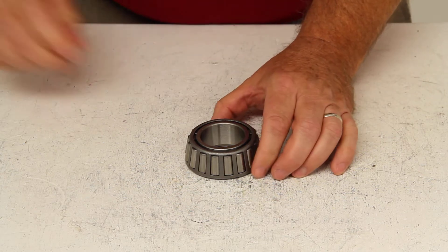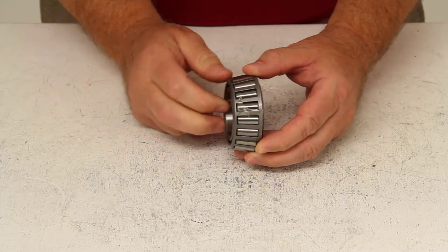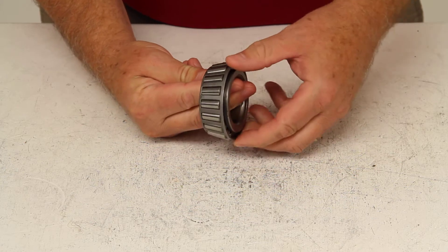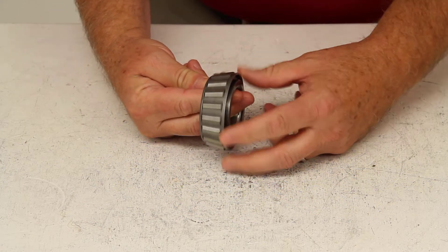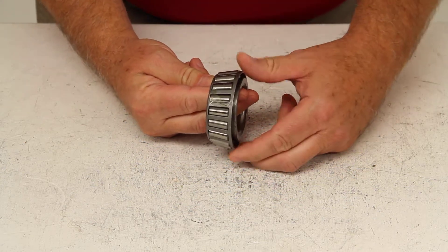Today we're going to review part number 2788. This is the Redline trailer wheel bearing. This is the inner bearing.